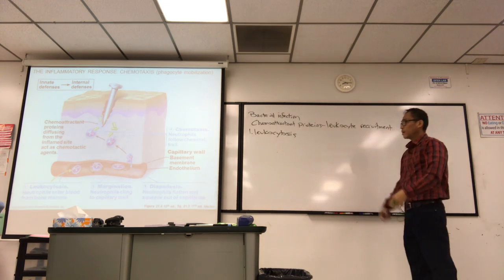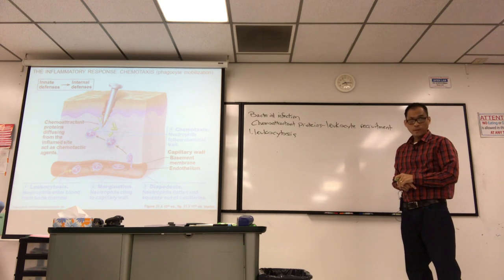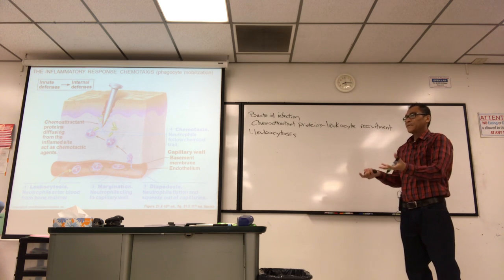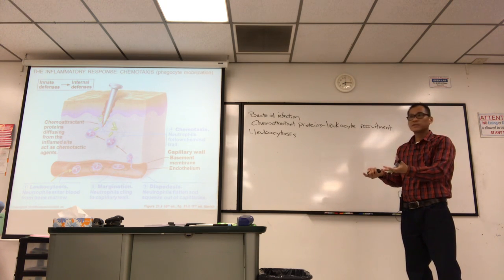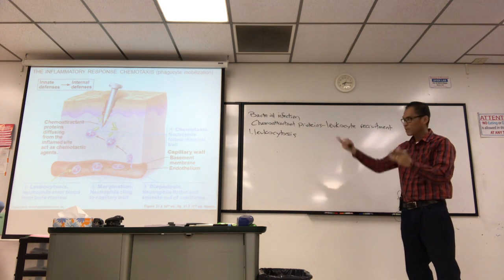Here's kind of an outline of the process. The first step they have there is leukocytosis. That simply means, in this example, the neutrophil enters the bloodstream from the bone marrow. That's important. You've got to get in the game if you've got to score. You can't score sitting on the bench. You have to be in the bloodstream.